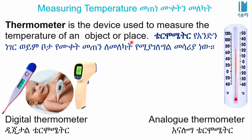This thermometer is used to measure the temperature of an object. This is called the traditional thermometer. We are also using a digital thermometer. This is why we use the code to make this display, because we are using the analog thermometer.